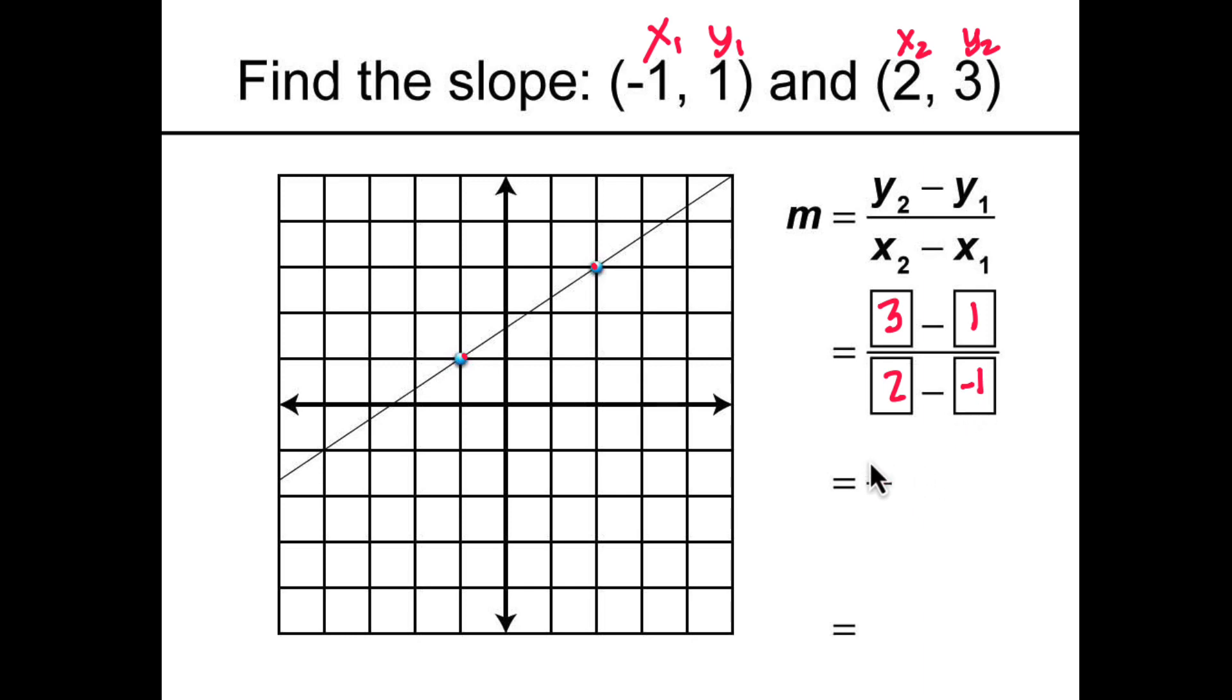Simplify the numerator and denominator. We get 2 over 2 plus 1, or 3, and then simplify the fraction. We can write it as a decimal, 0.66, and that is the slope of the line.